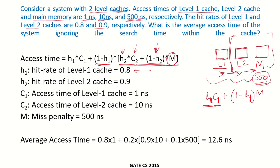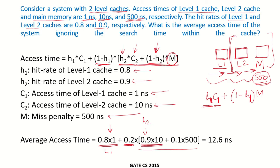With h1 = 0.8, h2 = 0.9, c1 = 1ns, c2 = 10ns, and main memory = 500ns, we substitute into the equation: 0.8 × 1 + 0.2 × [0.9 × 10 + 0.1 × 500]. The miss rate of L2 is 0.1, so 0.1 × 500 is the main memory access cost. Solving this gives an average access time of 12.6 nanoseconds.